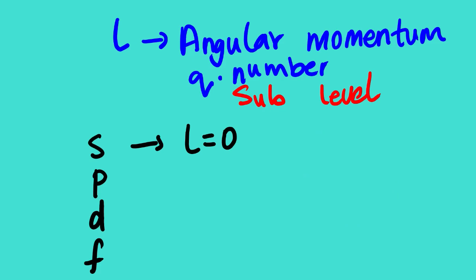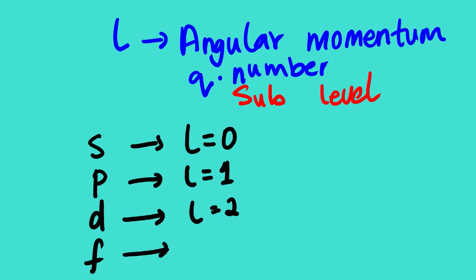You should take notes — we are going to use this information when answering questions. For P orbitals, the angular momentum equals 1. For D orbitals, it equals 2. For F orbitals, it equals 3. To summarize: S equals 0, P equals 1, D equals 2, F equals 3. That covers the sublevels.